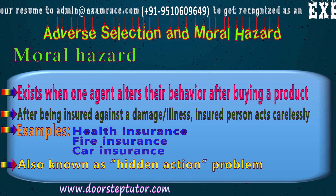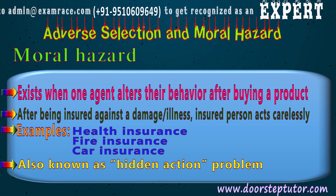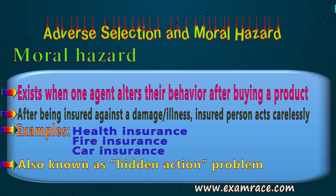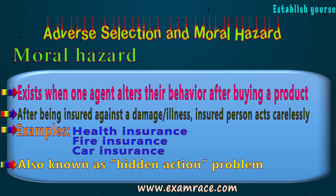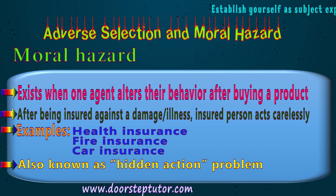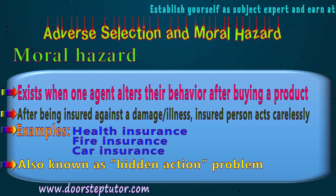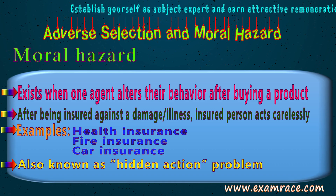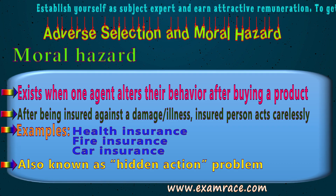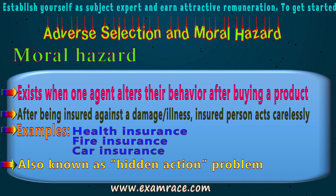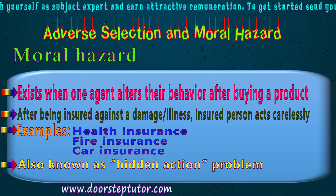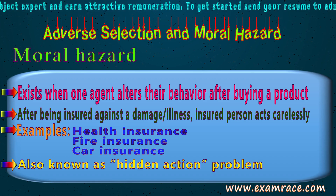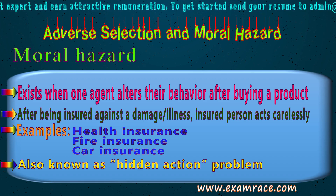The problems of adverse selection and moral hazard lead to market failure. Earlier, market failures were mostly associated with public goods and externalities, but with the emergence of the new theory of economics of information, we have come to know that imperfect and asymmetric information also lead to market failures.